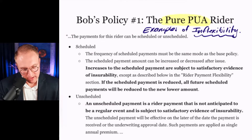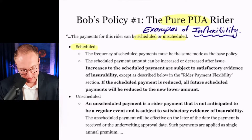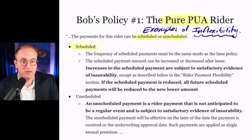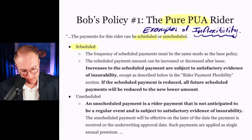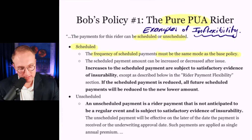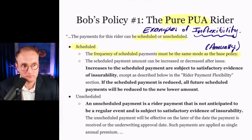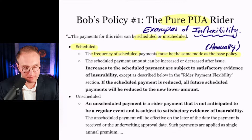From the illustration here, payments to this pure PUA rider can be scheduled or unscheduled. It so happens that for this particular policy, the assumption is that the PUA premiums would be scheduled. So what terms and conditions apply to Bob's scheduled PUA premium payments? Well, first, the frequency of those payments must be the same as the modal payments — in other words, it's got to be paid at the same time as your base premium. In this case, the modal premium was annually. So when can Bob pay PUA for this particular policy? On one day in the year.